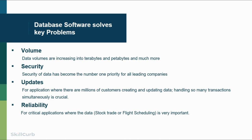We need database software systems to have security encryption layers added so we can protect our data. We have web applications that have millions of customers accessing their data, so we need sophisticated database systems that can handle these transactions simultaneously. Reliability becomes so important for companies where data is their business — for a stock exchange or a flight scheduling system, we cannot have data that is not correct. Data has to be reliable. Database software or database management systems are needed to solve these problems.